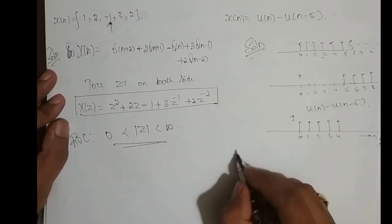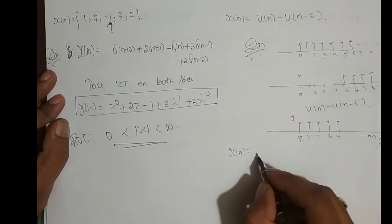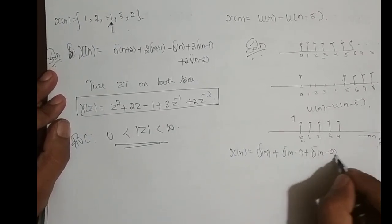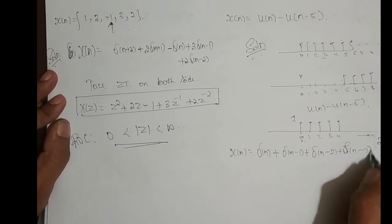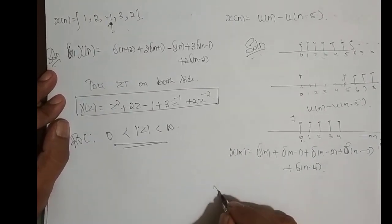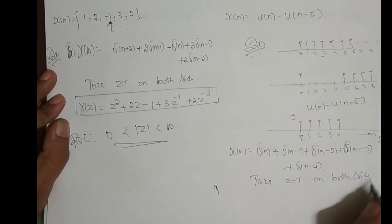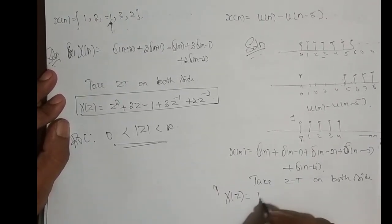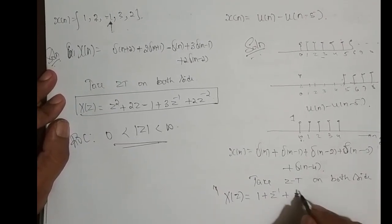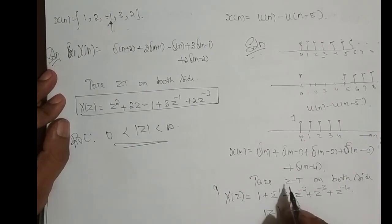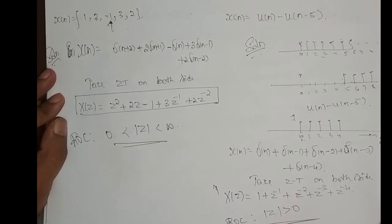Writing in terms of delta functions: X(n) = delta(n) plus delta(n minus 1) plus delta(n minus 2) plus delta(n minus 3) plus delta(n minus 4). Taking Z-transform on both sides: X(Z) = 1 plus Z to the power minus 1, plus Z to the power minus 2, plus Z to the power minus 3, plus Z to the power minus 4. The ROC is magnitude of Z greater than 0, since it is a finite length right-sided sequence.